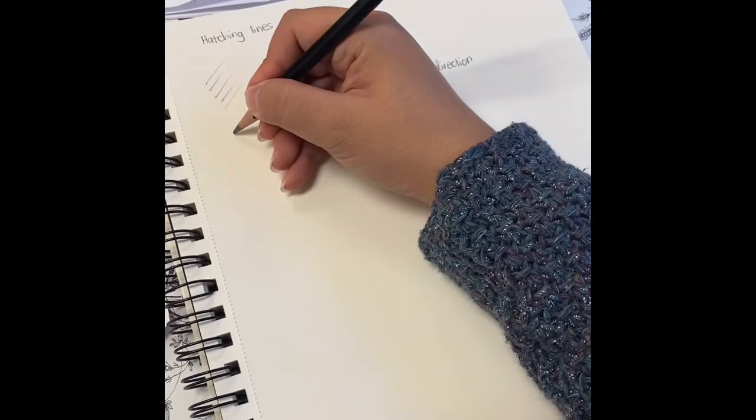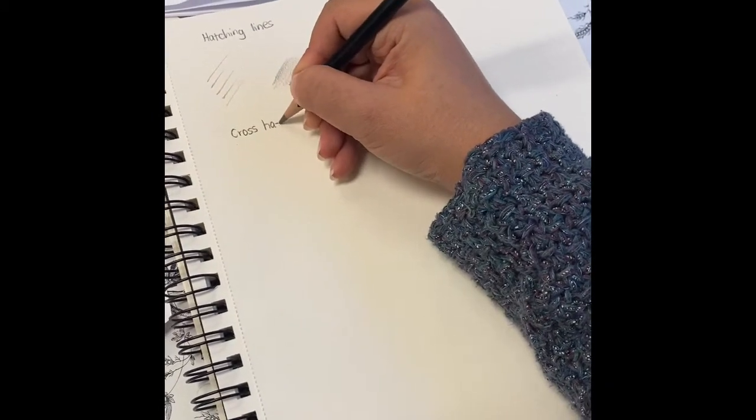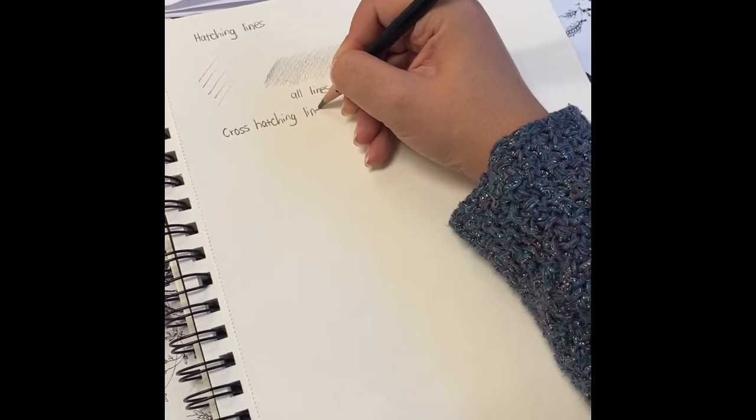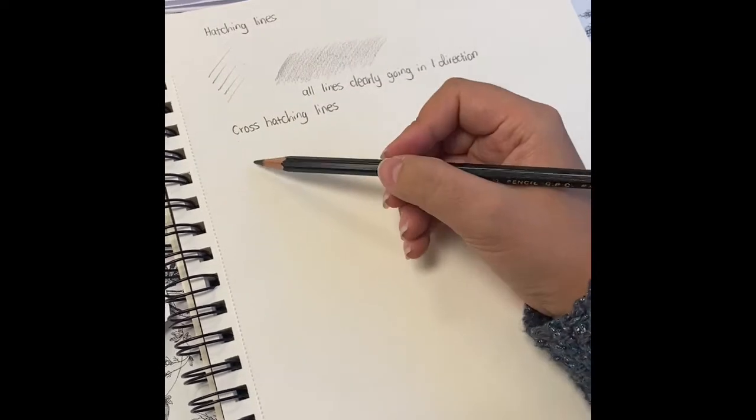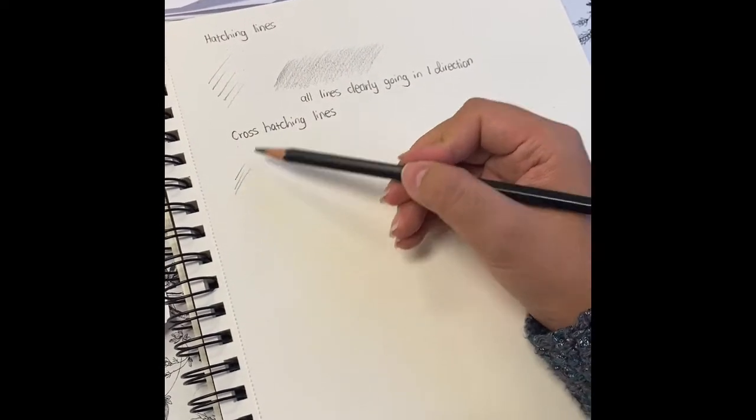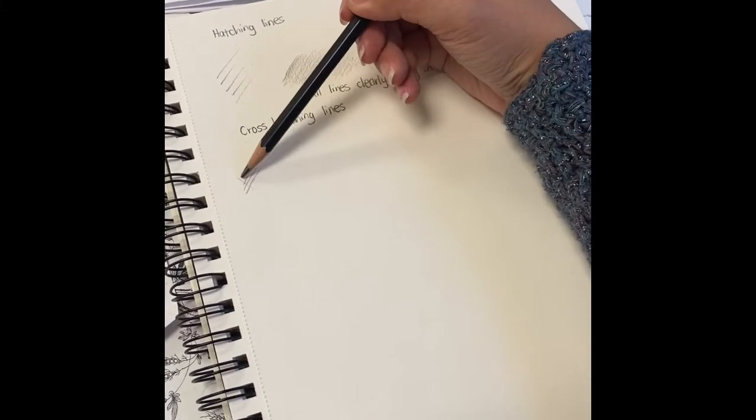Next, we're going to work on cross-hatching lines. And cross-hatching lines are lines that start with hatching lines. So you're going to go in one direction, just like you did the hatching lines. And then you're going to go in the opposite direction.